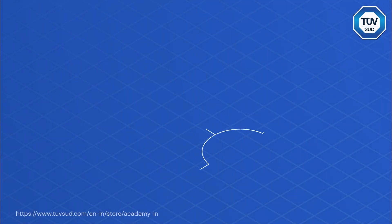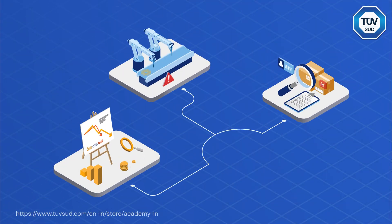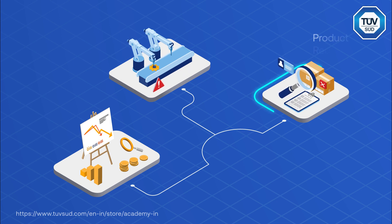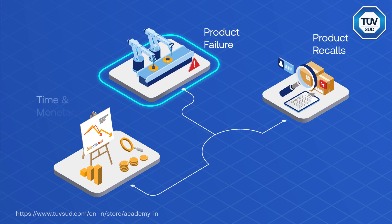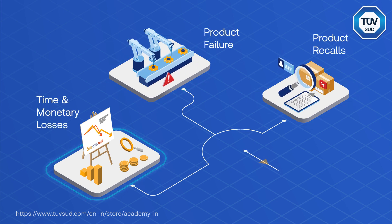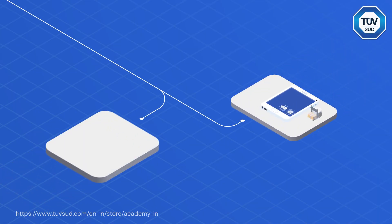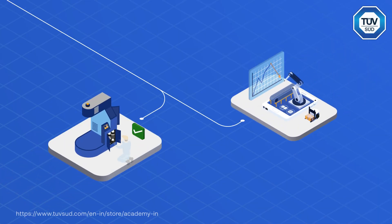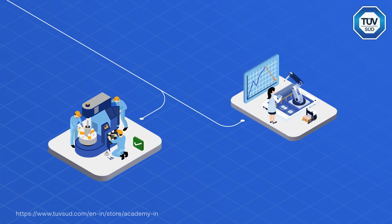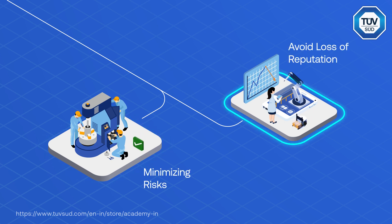Automation failures in electrical and electronic systems can lead to severe consequences like product recalls, failures, and time and monetary losses. IEC 61508 specifies standards of functional safety that can help in minimizing risks and avoiding loss of reputation.